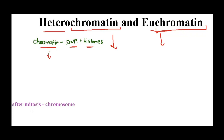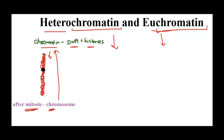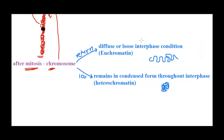In DNA packaging we saw that chromatin is condensed to form a chromosome during the cell division process. Once cell division — say mitosis — has occurred, the chromosomes are separated and present in the daughter cell. What happens to this chromosome now? It will go back to its less condensed form, that is chromatin. In interphase you will observe chromatin. So this highly condensed chromosome returns back to a less condensed form of chromatin, and there are two possibilities for what it returns to.